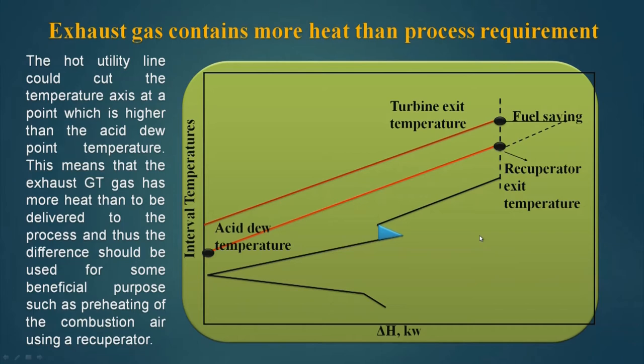The hot utility line could cut the temperature axis at a point higher than the acid dew point temperature, as we see in the picture. This means the exhaust gas has more heat than to be delivered to the process, and thus the difference should be used for preheating of the combustion air using the recuperator. Basically, using the recuperator we are resizing it and making the matching better.